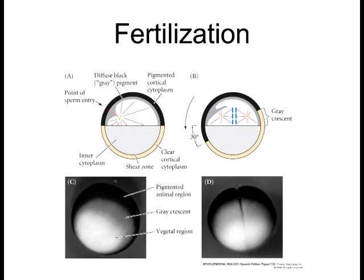After the sperm enters, you get what's called a cortical rotation, where the cortex moves about a 30-degree angle. Initially, there's an even distribution of mRNAs such as disheveled in the top half, but when the rotation occurs, it redistributes concentrations disproportionately. Cleavage will then generate different amounts of protein in different groups of cells, which is vital to overall Xenopus development. Things are not distributed evenly in the initial oocyte.